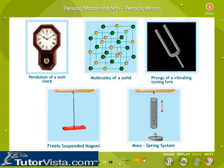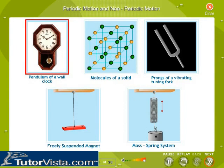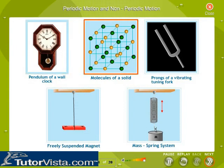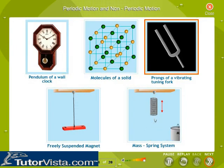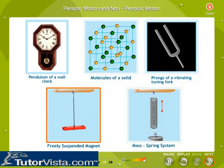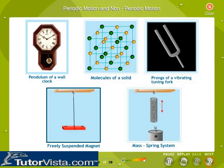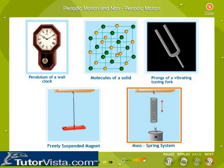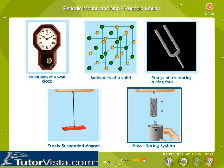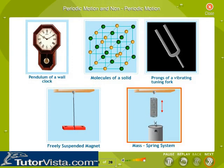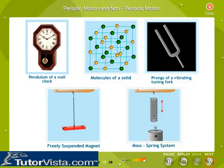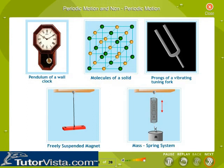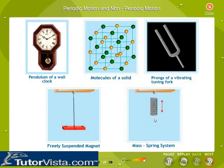Examples of simple harmonic motion include: the pendulum of a wall clock, molecules of a solid, a magnet, prongs of a vibrating tuning fork, a suspended bar magnet displaced from its north-south direction, a mass attached to a spring when compressed or stretched, and charges, voltage and current under suitable conditions.